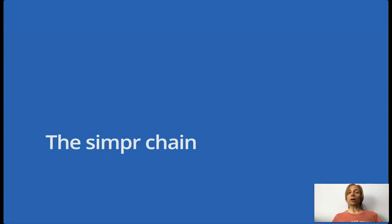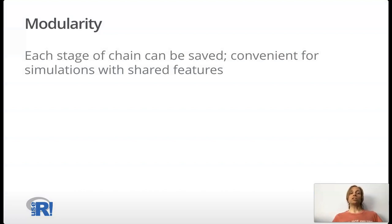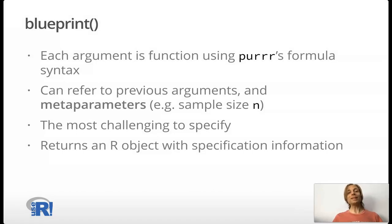Let's look a little bit more at this Simpar chain and how we build up a simulation like this. Part of the idea of having things in a chain is modularity. Each stage of the chain can be saved, which is convenient for simulations with shared features. We start with the blueprint. Each argument is a function which uses PERS formula syntax. And we can refer to previous arguments, so previous named arguments, and we can also refer to meta parameters, something such as sample size n. Of course, the blueprint is the most challenging to specify because that's our data generating mechanism. So, we have to understand our model in order to be able to simulate it. And this returns an R object with specification information. We haven't done anything yet.